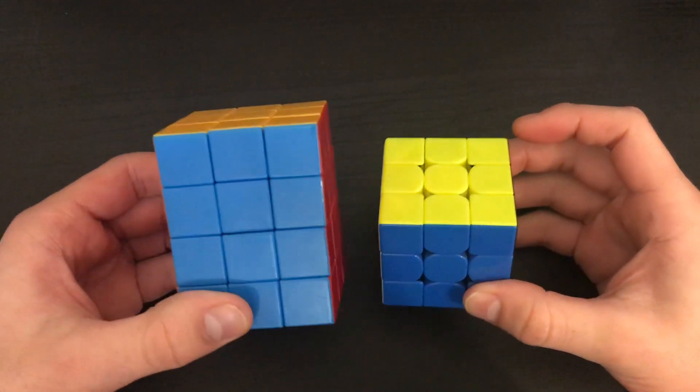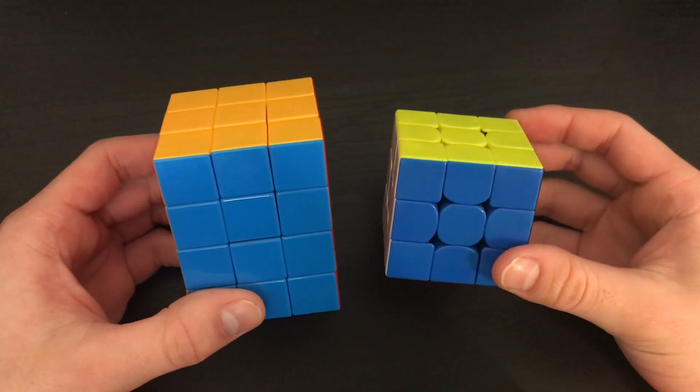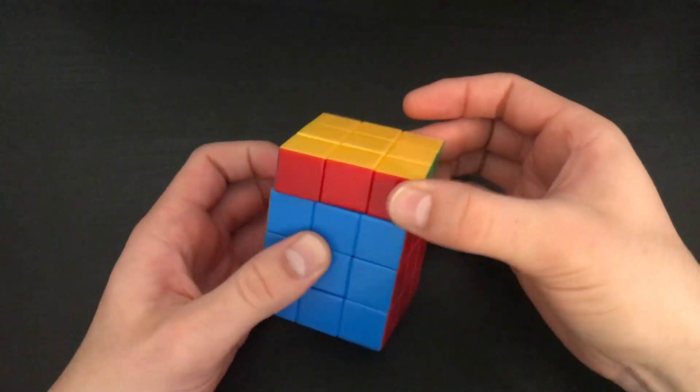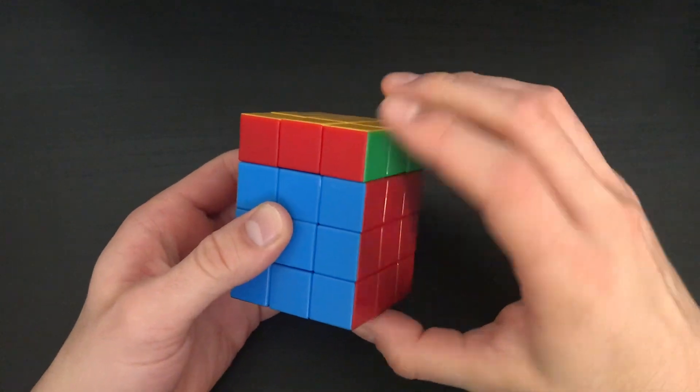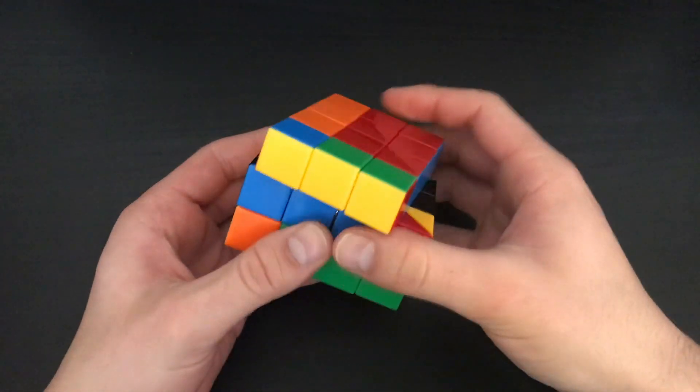The 3x3x4 appears similar to the typical 3x3x3, but there are some pretty major differences. It does turn normally by 90 degrees along this axis, but along the other two axes you have to turn it by 180 degrees, otherwise you'll get lockups like this.